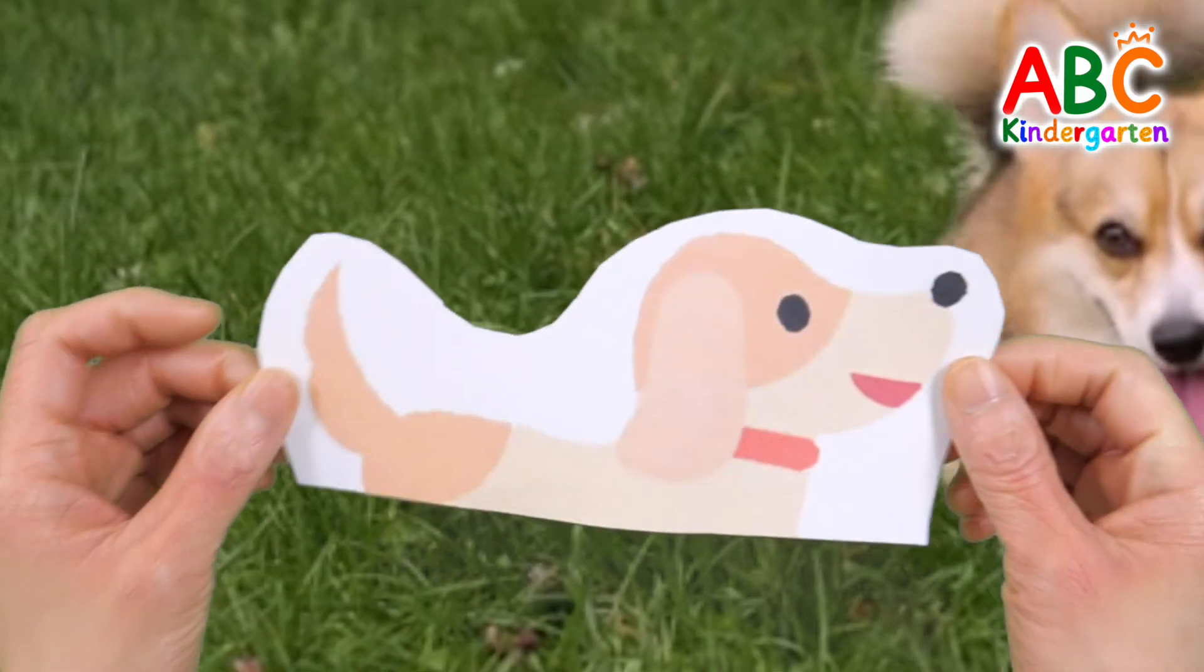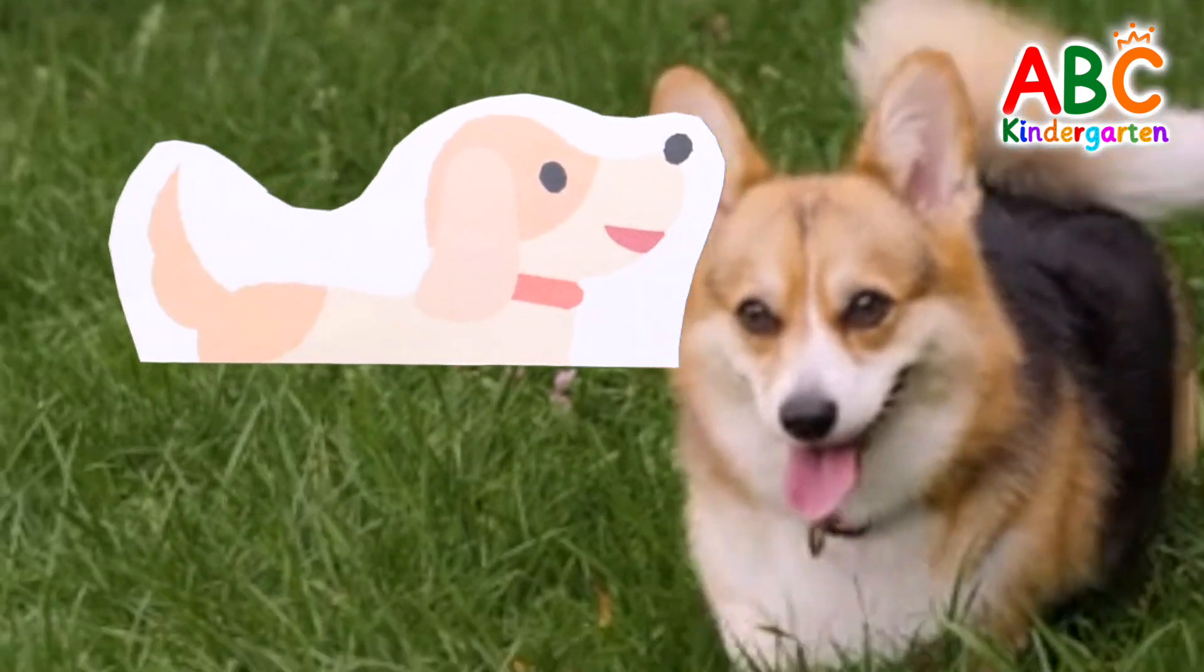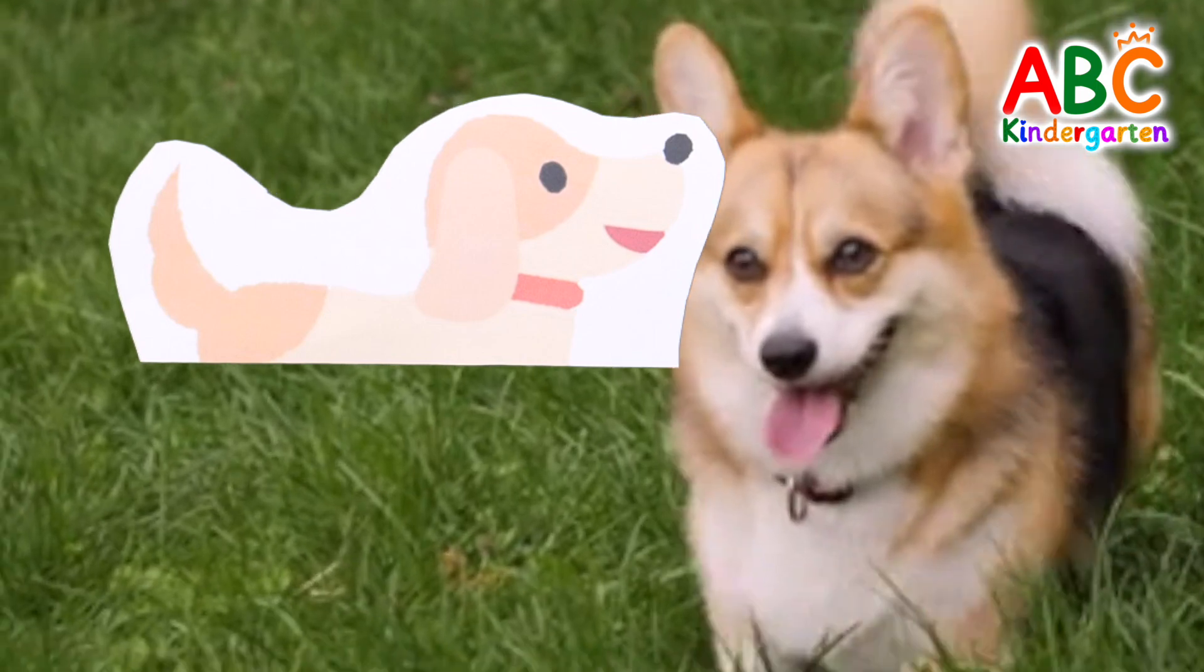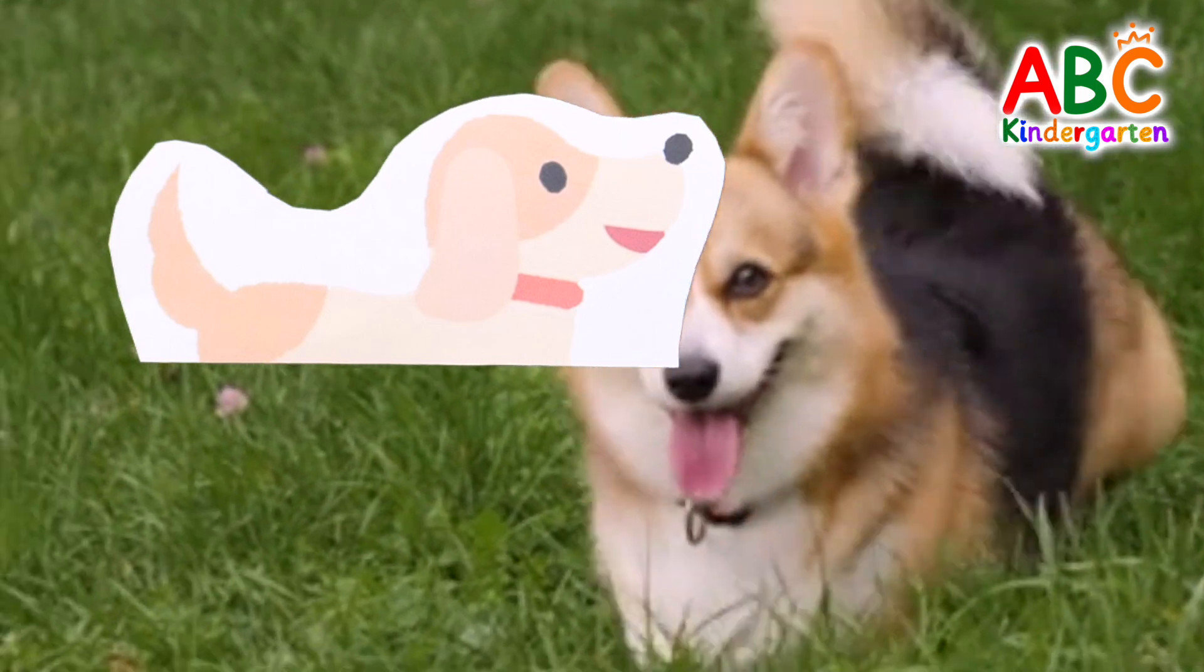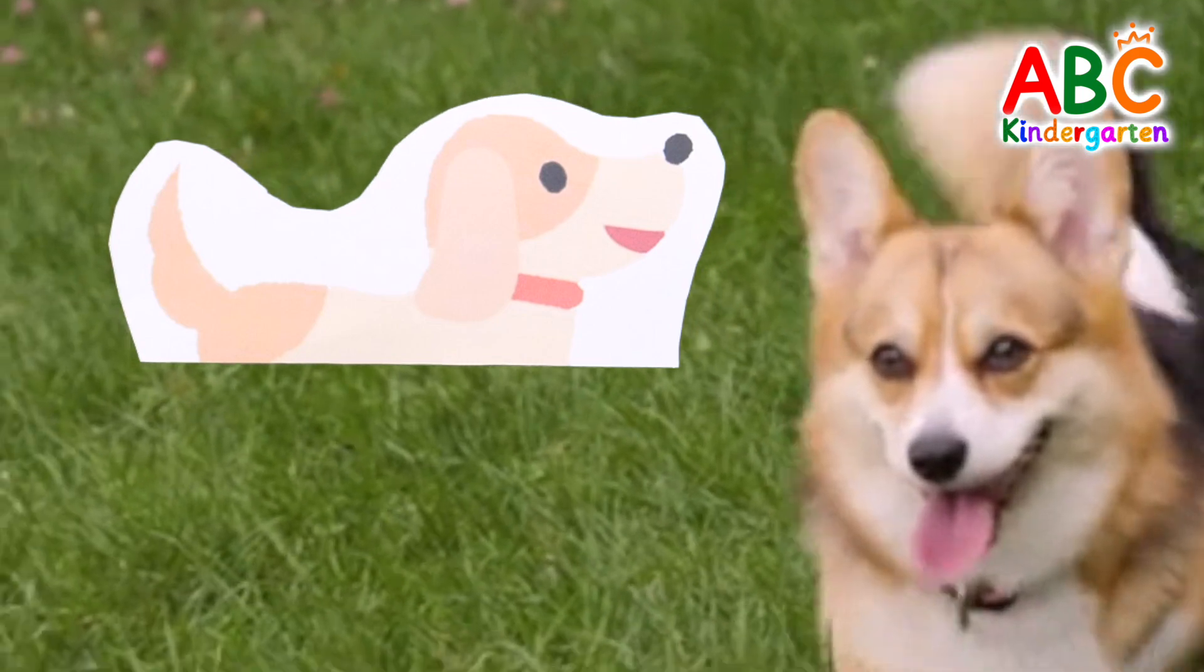Let's learn numbers by counting the number of legs of animals. It's a cute puppy! How many legs does a dog have? That's right! The correct answer is 4.